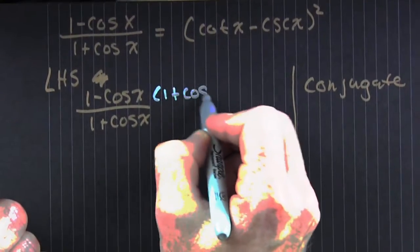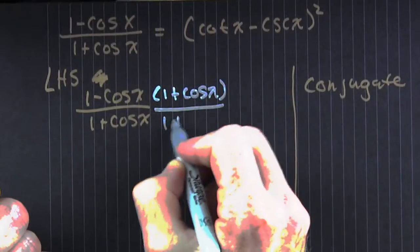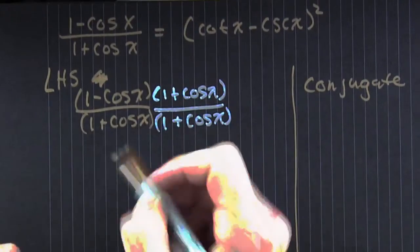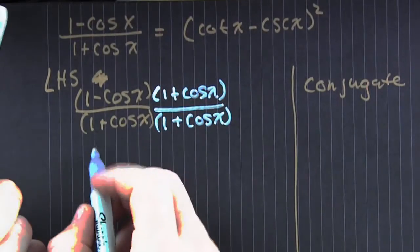Look what this guy's doing. He's multiplying by the conjugate in the numerator. Let's see where this takes him. Alright. So top and bottom by that. It's the magic one. Now what?